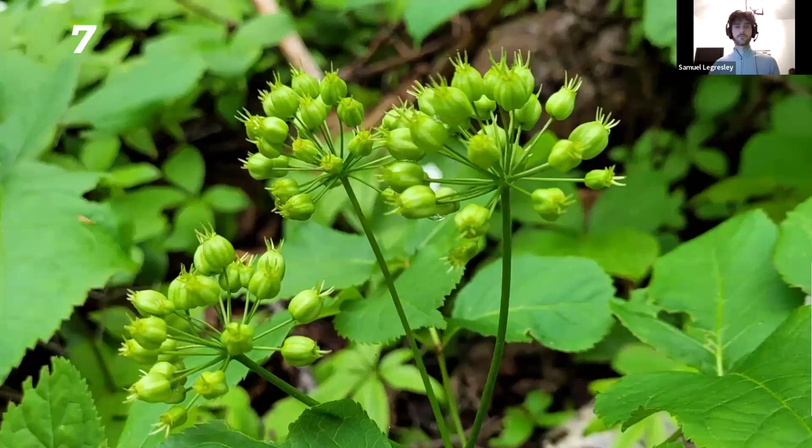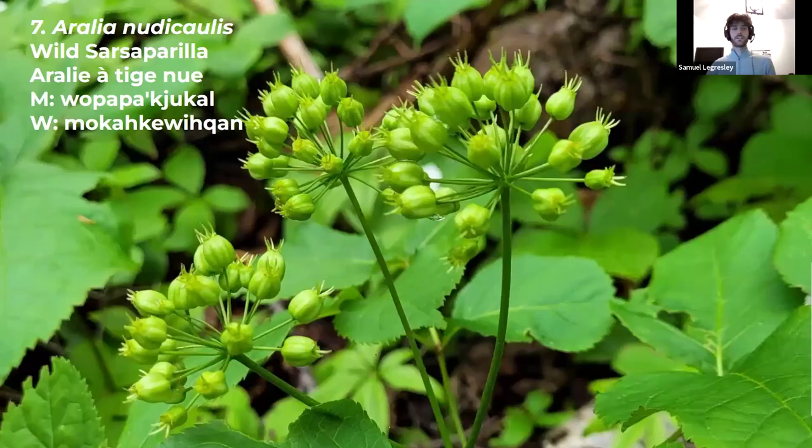We're just going to go quickly because we're nearing the end of the webinar. It's under an umbrella and has very similar flowers and black fruit at the end. It's the wild sarsaparilla — it does look like some kind of onion, but it's not. It's actually a dicot called the wild sarsaparilla, a really fun little plant you can see in the woods.